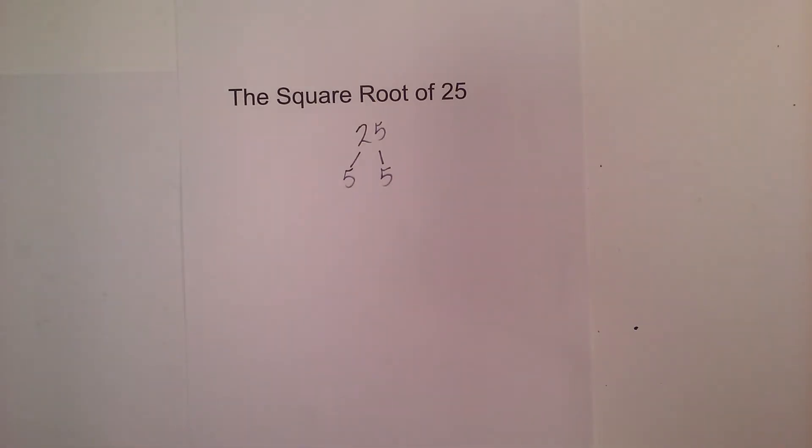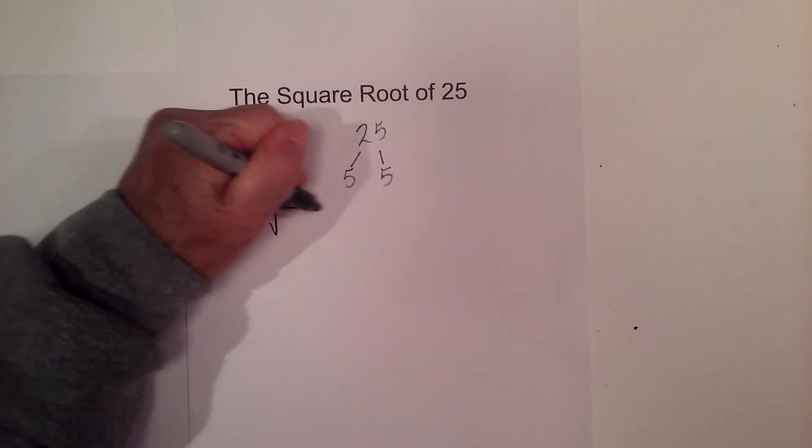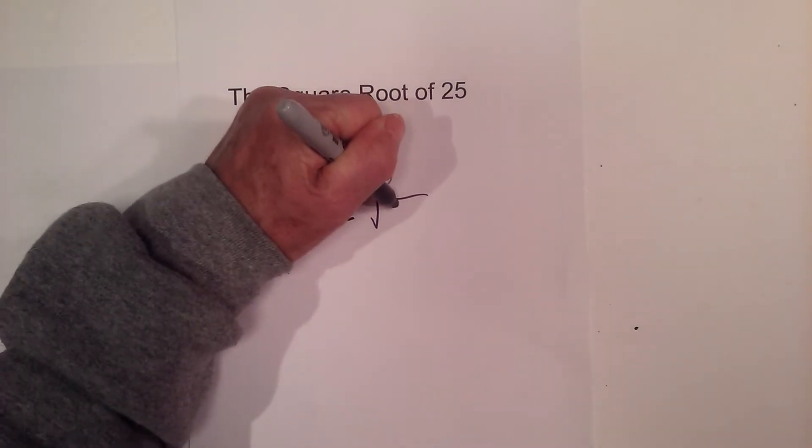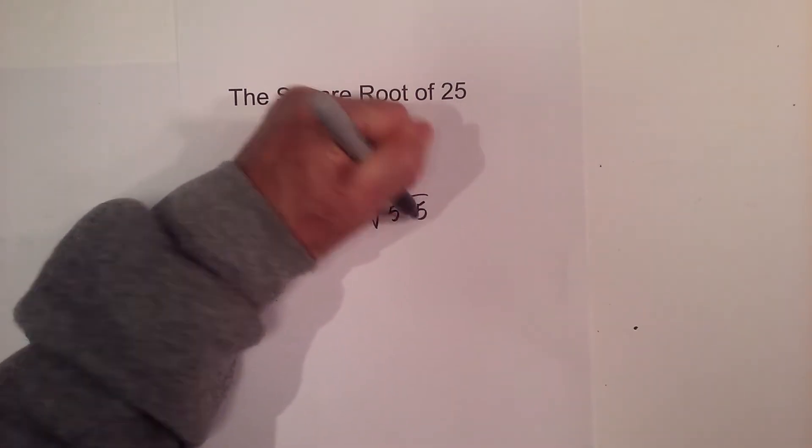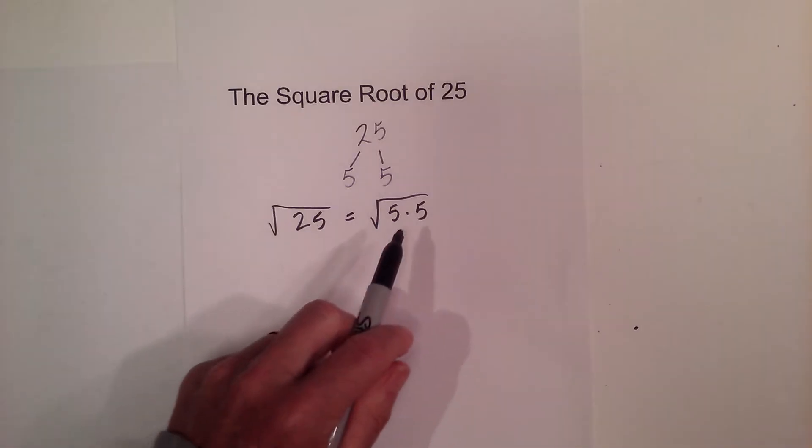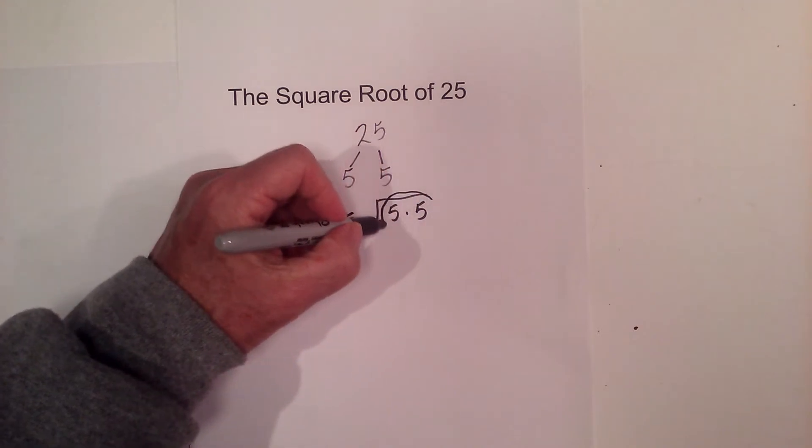Now I can rewrite the square root of 25 like this. Square root of 25 I can rewrite it as square root of 5 times 5. And what I can do since it's a square root, if I have pairs of numbers I can pull them out.